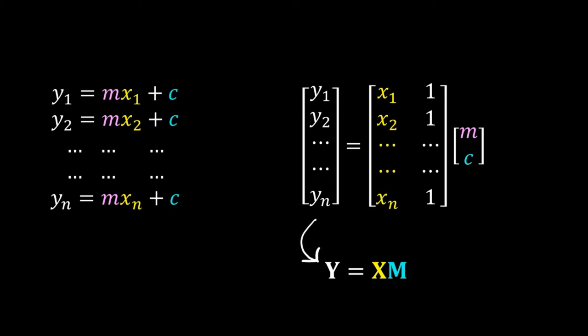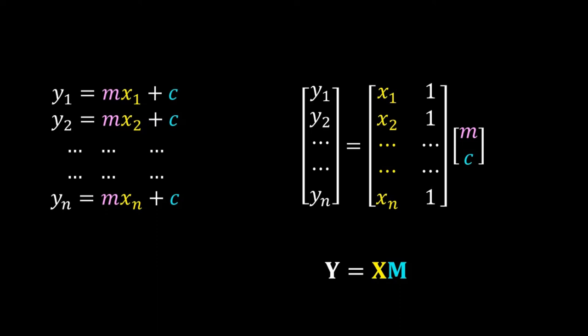Capital Y is a column vector with all the y's: y1, y2, y3 and so on. Capital X is an n by 2 matrix. The first column has all the x's — x1, x2, x3 and so on — but the second column has only ones. Capital M is also a vector and it has m and c. M and c are unknown; we have to estimate their values.